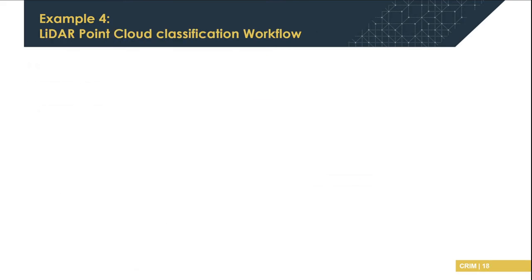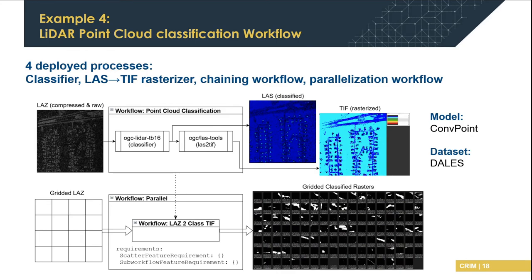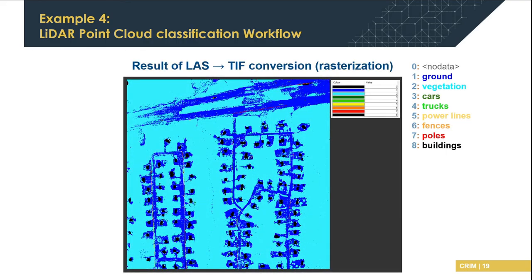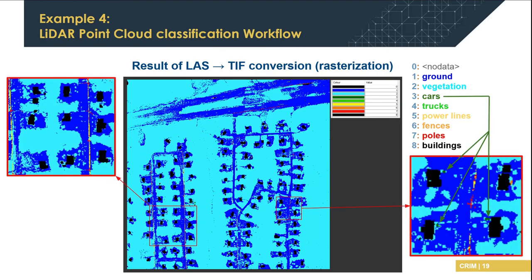The fourth workflow is a point cloud classification pipeline. The first application predicts classes from an input point cloud and produces a classified point cloud. The second application takes the classified point cloud and rasterizes the result into an image. The third process packages these two previous processes into a workflow that can be executed directly. The whole pipeline is then parallelized with the fourth workflow using standard CWL requirements. Results show classified and rasterized outputs with fine spatial detail.